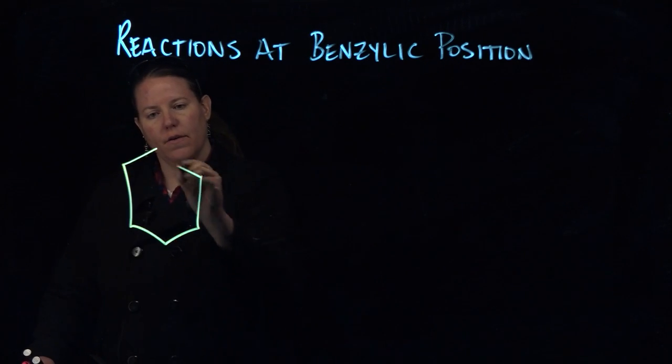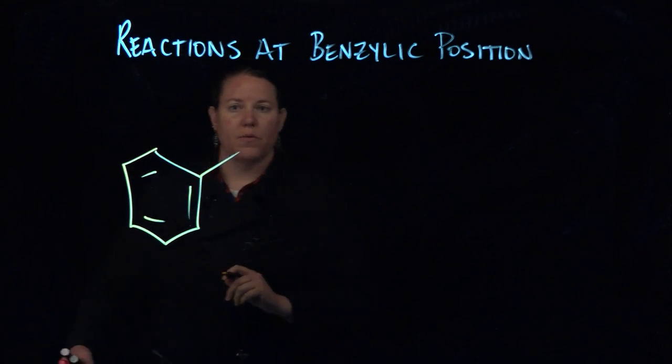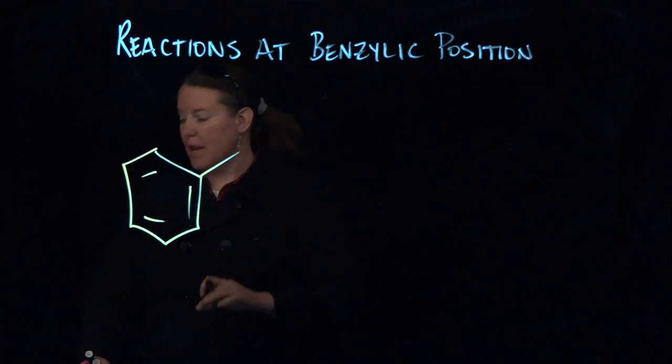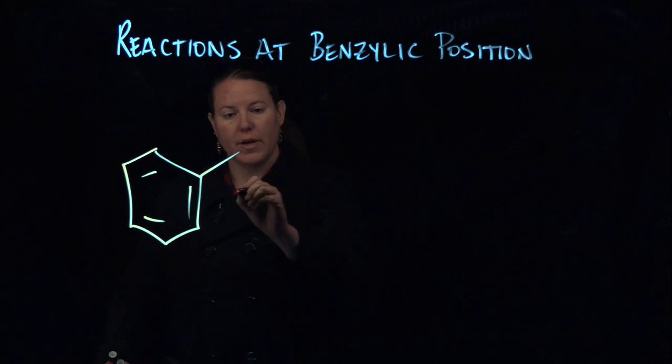Let's say I have a standard benzene ring with a methyl group coming off. Now remember the common name of this is toluene. So toluene is what we're looking at.